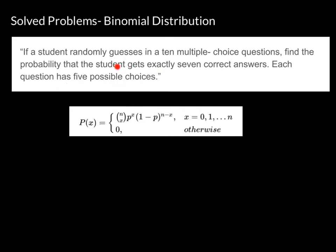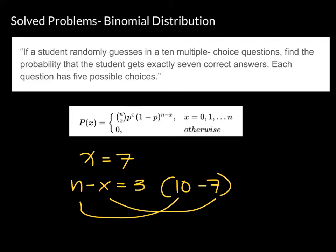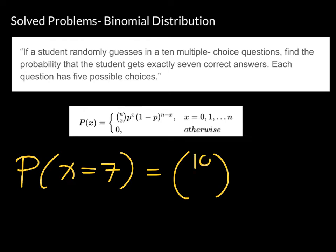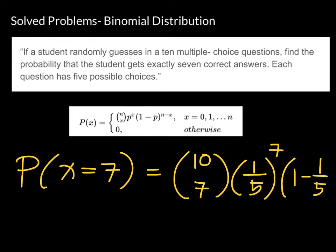In this example, we want exactly seven correct answers, so x = 7 and n - x = 3, which is 10 minus 7. The solution is: P(X = 7) = C(10, 7) * (1/5)^7 * (4/5)^3. The probability of success is 1/5 and the probability of failure is 1 - 1/5 = 4/5, raised to n - x = 3.